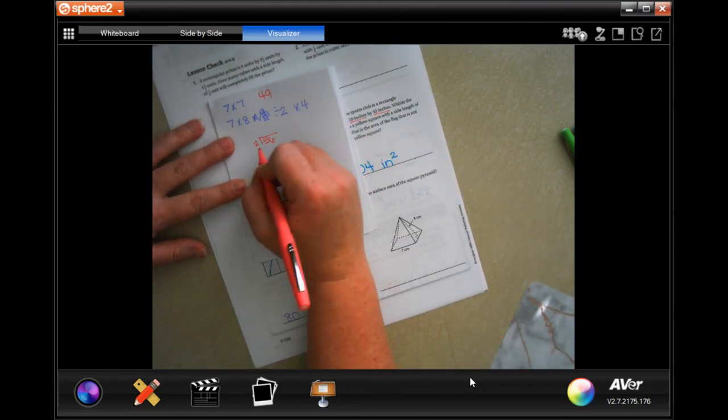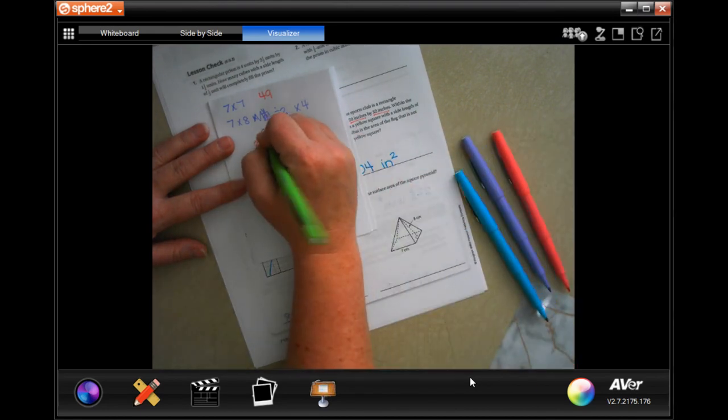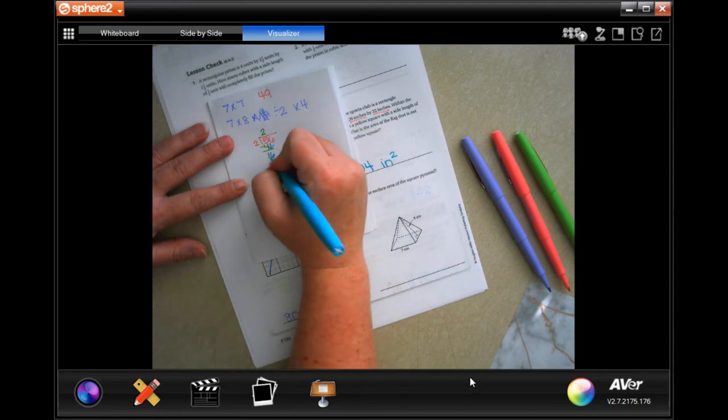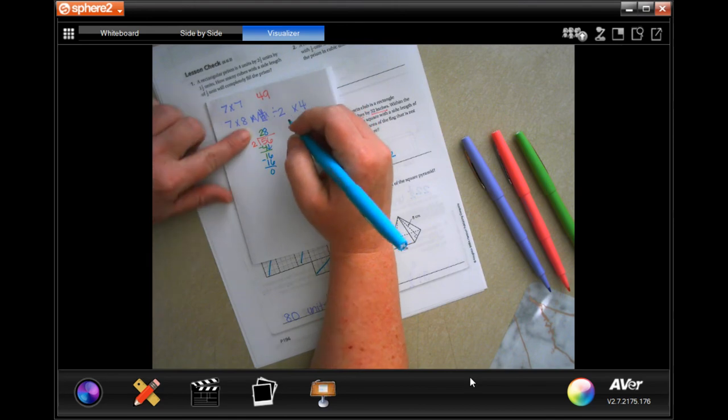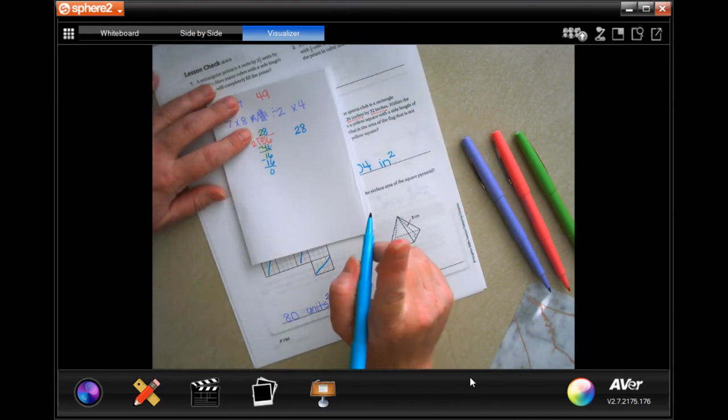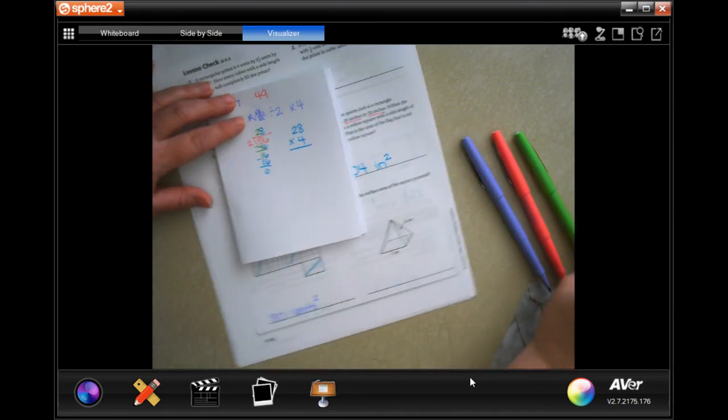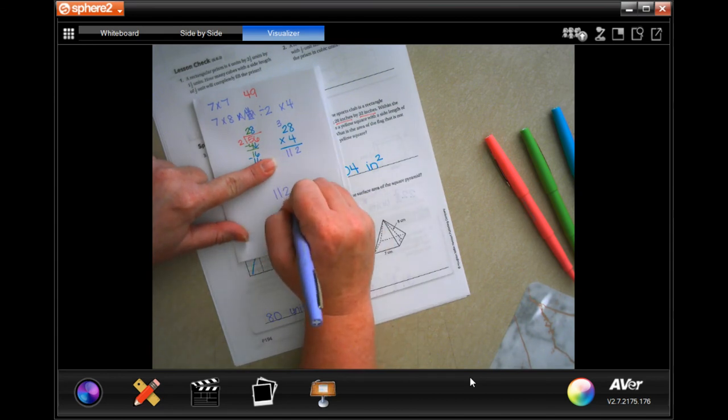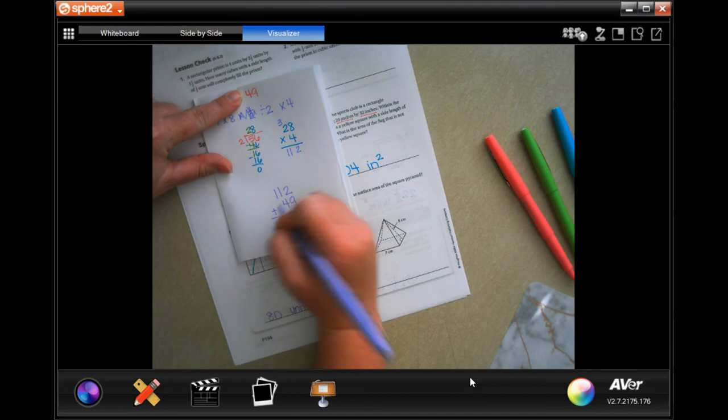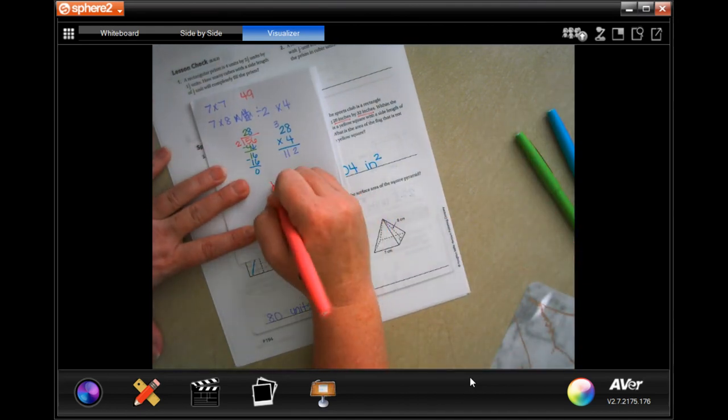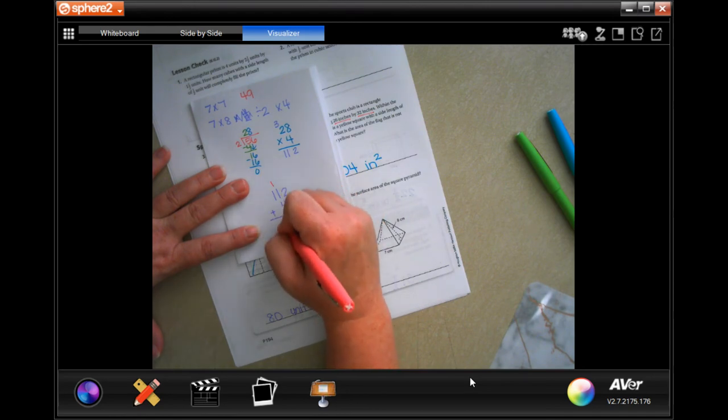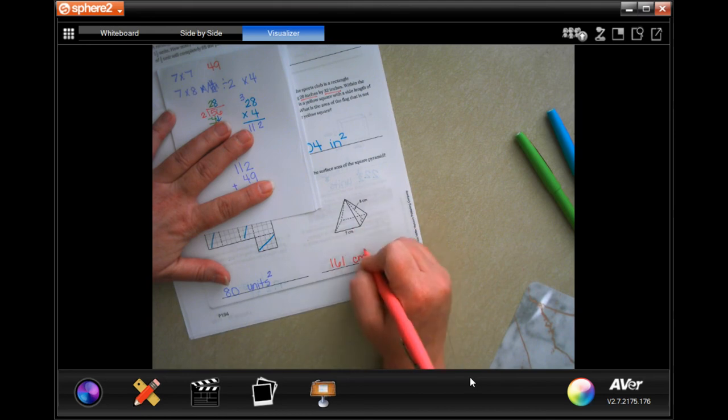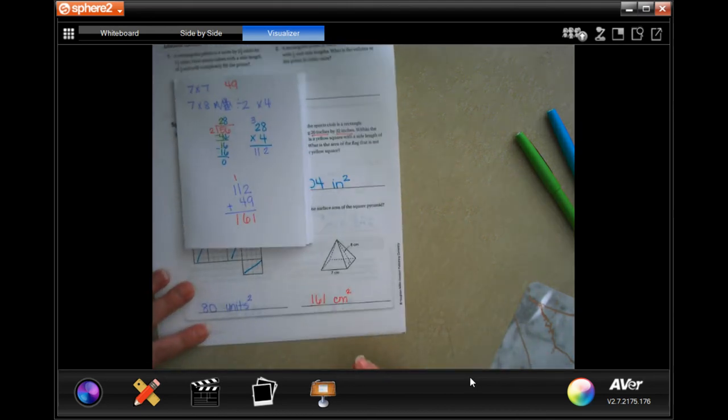Now, 2 goes into 5, 2 times. 2 times 2 is 4. So, get 1. 1 is smaller than 2. So, I'm going to bring down my 6. 2 goes into 16, 8 times. 8 times 2 is 16. 16 across is 0. And now, I have 28. And that's for one of the triangles. But I need 4 of those. And I'm going to multiply it by 4. 4 times 8 is 32. 4 times 2 is 8. Plus 3 is 11. So, now, I have 112. And I'm going to add on about 49. 2 plus 9 is 11. So, carry the 1. 1 plus 1 is 2. Plus 4 is 6. And 3 now, 1 now. So, 161. It's in centimeters. And I multiplied centimeters by centimeters each time. So, it's centimeters squared. Make sure you guys are writing your work down.